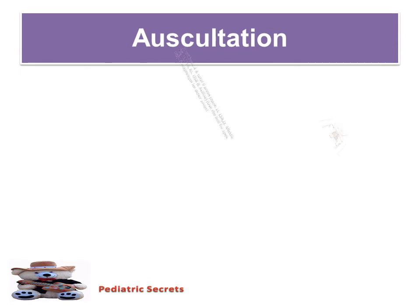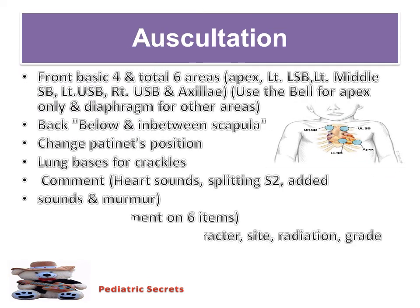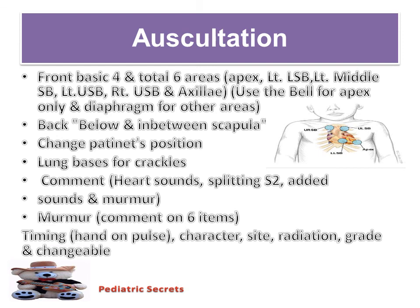Finally, auscultation. Before beginning, let's review the areas of cardiac auscultation. Each of these spaces has a traditional valvular name, but it is important to remember that murmurs of more than one origin may be heard in a given area. The first area is in the second right intercostal space next to the sternum — this is the aortic area. The second intercostal space to the left of the sternum is described as the pulmonic area. The lower left sternum is known as the tricuspid area, and the apex is described as the mitral area. Be sure to listen to the back — the murmur of aortic coarctation is sometimes only found here.